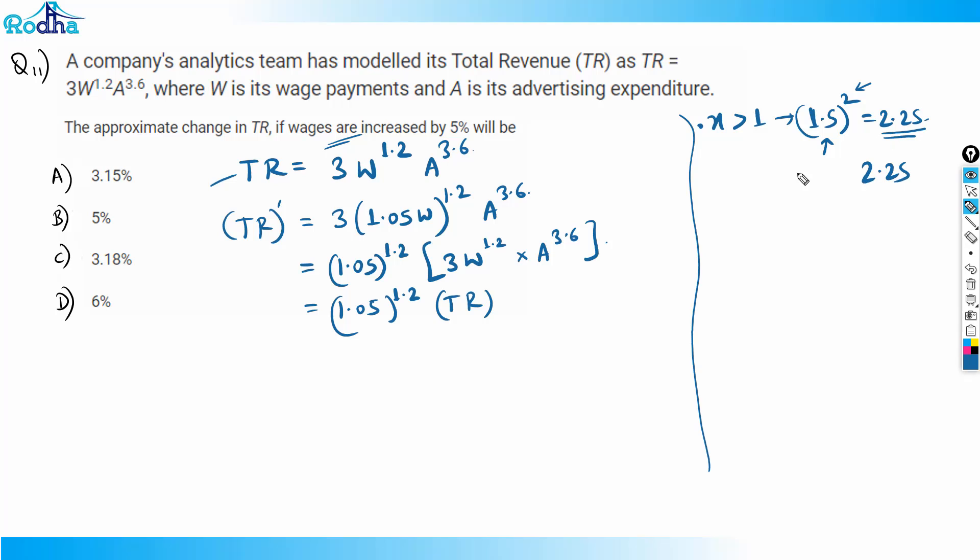But the same thing doesn't happen when x is between 0 and 1. For example, if I take 0.8, if I square 0.8 its value is 0.64. So after squaring, the value has decreased.